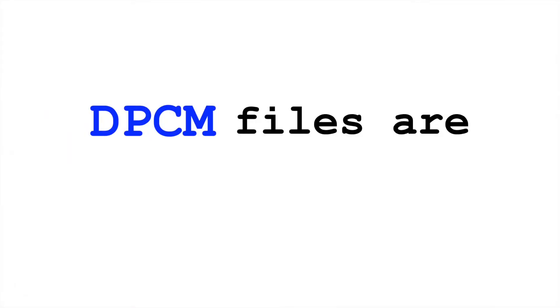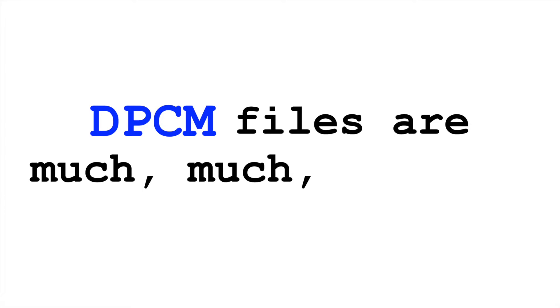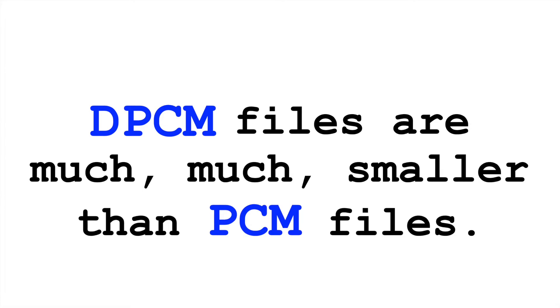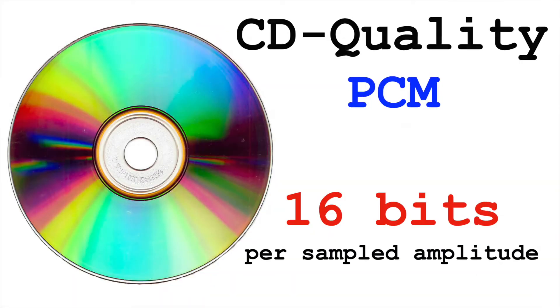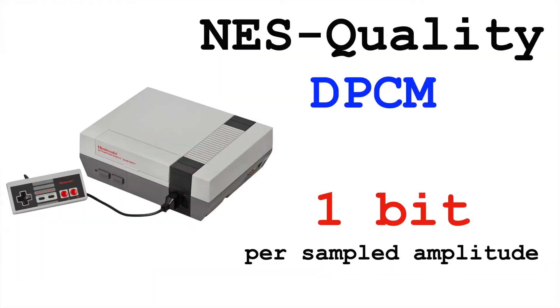All this to say, DPCM files can be much, much smaller. For example, CD quality audio uses 16 bits per sample, while the DPCM on the NES used only 1 bit per sample.